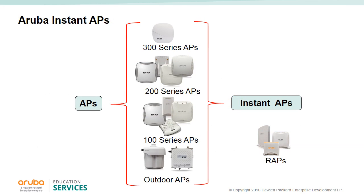The 300, 200, 100, and outdoor series of APs can be purchased as controller-based APs or as IAPs. The IAPs can be converted to controller-based APs, and they can also be reconverted as IAPs with a hard reset. Controller-based APs cannot be converted to IAPs. Remote APs are all shipped as Instant APs and can be converted to RAPs. This can easily be done using the cloud-based Activate service.